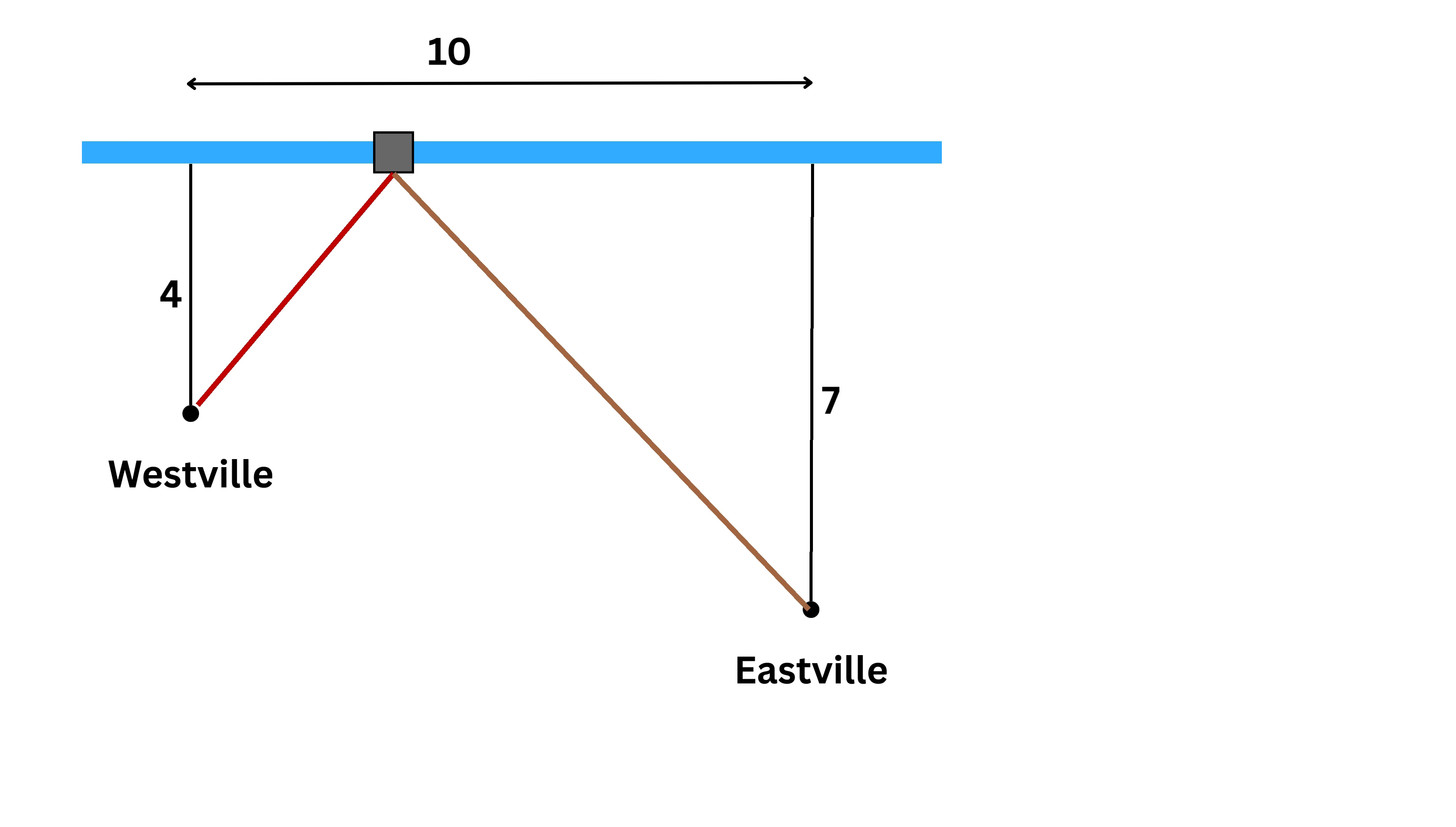Let's test a few different positions for the station and see how the total length of the pipes changes. First, suppose we put the station right in the middle of the ten-mile width, that is, five miles from Westville's vertical line and five miles from Eastville's. The distance from the station to Westville would then be the square root of four squared plus five squared, which is square root of forty-one, about six-point-four miles. For Eastville, the distance would be the square root of seven squared plus five squared, which is square root of seventy-four, roughly eight-point-six miles. So the total pipe length in this case is about six-point-four plus eight-point-six, which is fifteen miles.